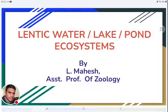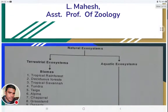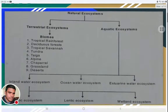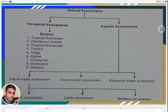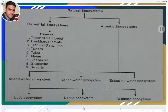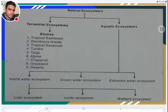We are going to learn about lentic water ecosystems, which may also be asked in examinations as lake ecosystem or pond ecosystem. In previous videos we covered the classification of natural ecosystems, including aquatic, freshwater, marine water, and estuarine water ecosystems. Today's class focuses on inland water ecosystems, and specifically lentic water ecosystems, one of the three types of inland freshwater ecosystems.